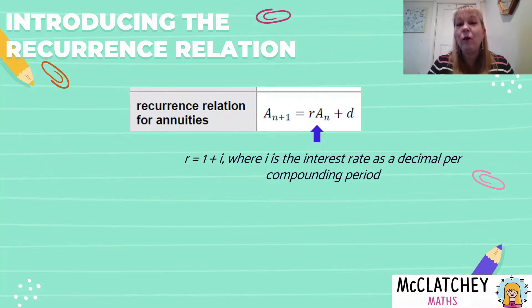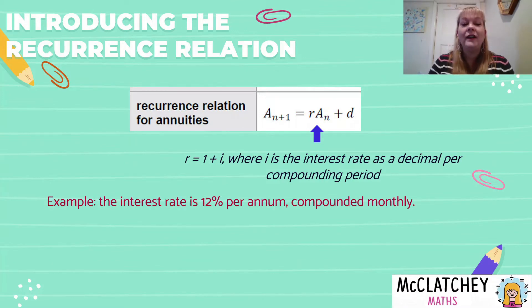And the reason why we add one to it is if we just multiply the amount that we put in the bank by the interest rate, we're going to calculate the interest that's earned, not the amount after the interest is added. So this adding one actually gives us the amount after the interest has been added. That's why it will enable the annuity to grow.